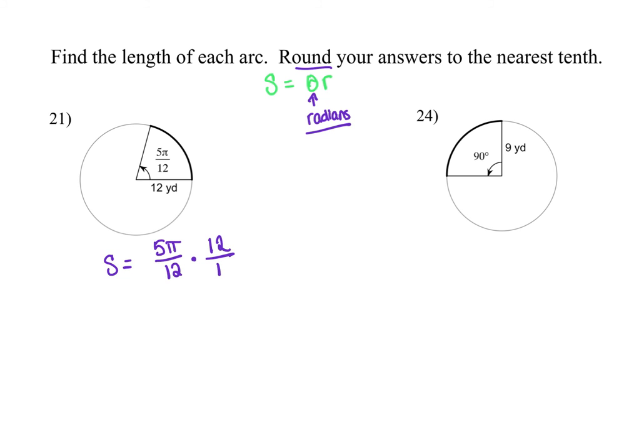This specifically says, round your answer to the nearest tenth, which means I am actually going to put that 5π into my calculator and round to one decimal place. So my answer here is going to be 15.7. My units here is yards.